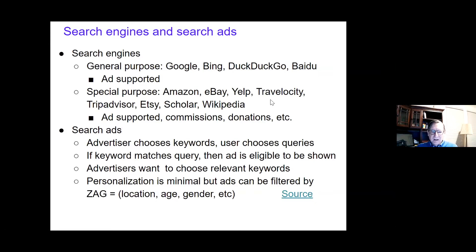The basic way search ad models work is the advertiser chooses keywords and the user chooses queries. If the keyword matches the query, the ad is eligible to be shown. Advertisers define the relevant keywords they're interested in — if they want customers looking for frying pans, they're going to show ads for frying pans or cooking equipment of other sorts.